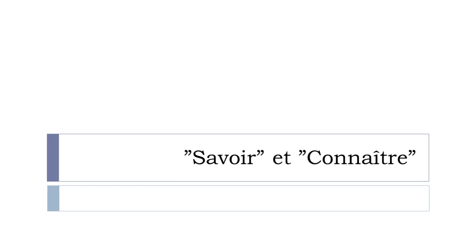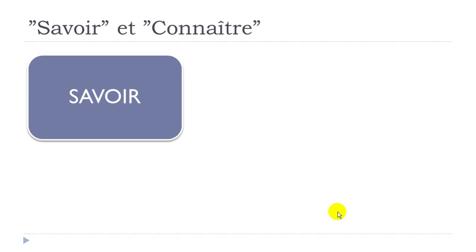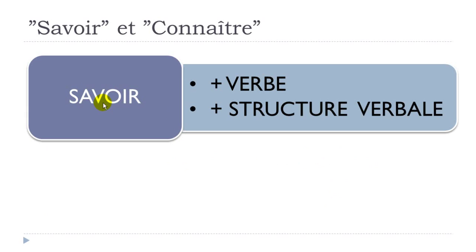We'll have the pleasure to discover together two verbs. First, the verb Savoir, and then the verb Connaître. If you want to translate them directly in English, basically they mean the same thing — they would both be translated as 'to know.' So two verbs for the same meaning means you will have two different uses.